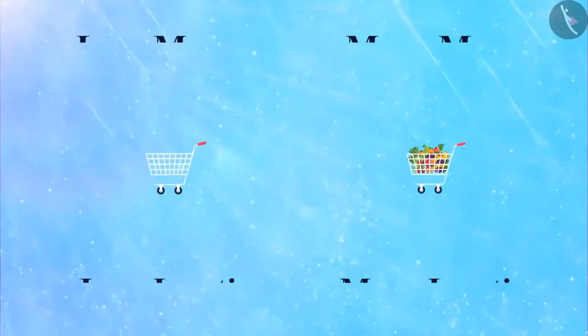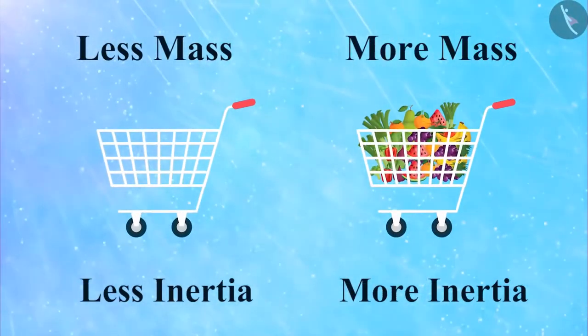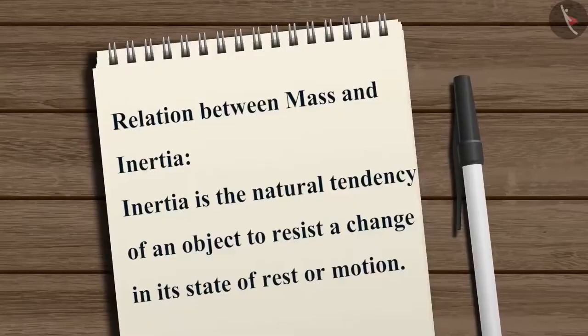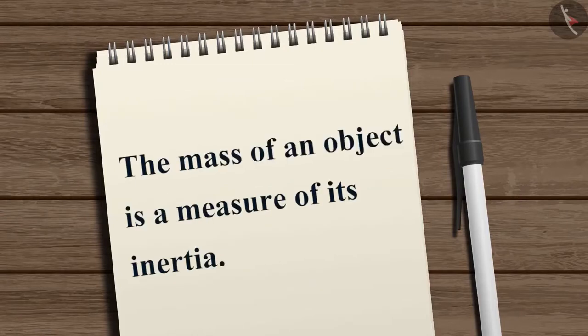Accordingly, we can say objects with more mass have more inertia. Thus, the relation between mass and inertia can be stated as follows: Inertia is the natural tendency of an object to resist a change in its state of rest or motion, and the mass of an object is a measure of its inertia.